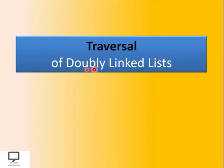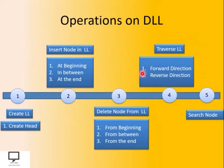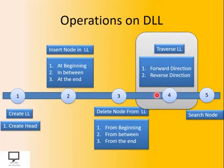Now let's see how to traverse a doubly linked list. A doubly linked list can be traversed in forward direction as well as in reverse direction. Among these different operations, we are going to focus on the traversal of a doubly linked list in forward as well as in reverse direction. First of all let's see how to traverse it in forward direction.